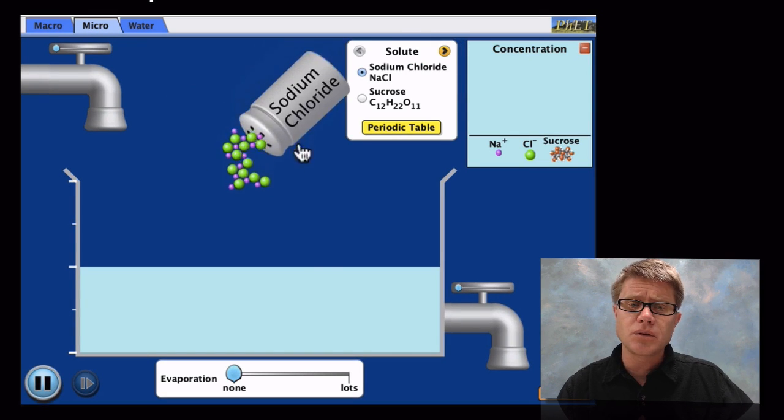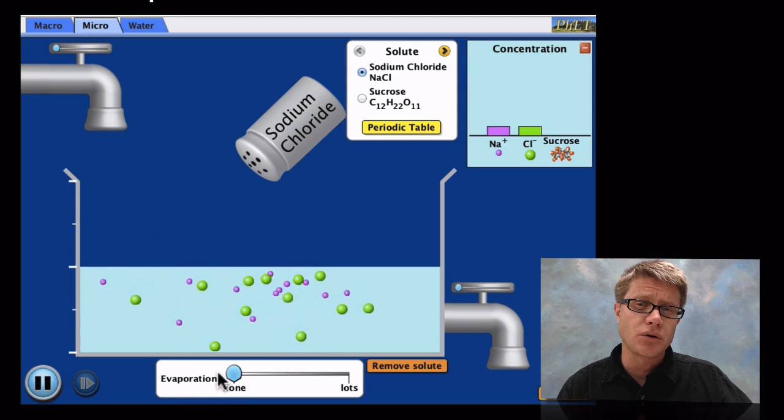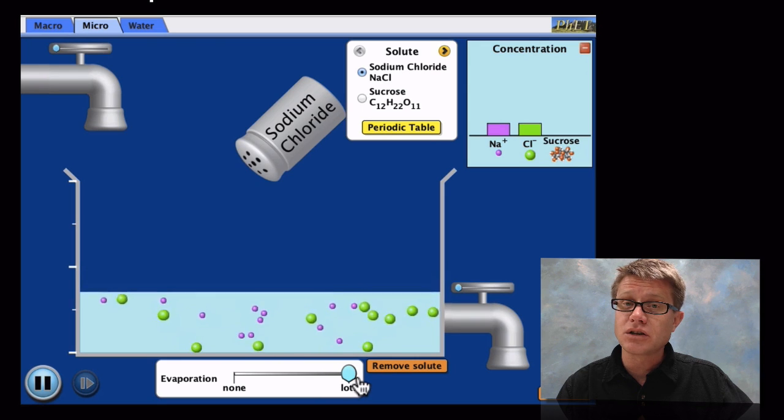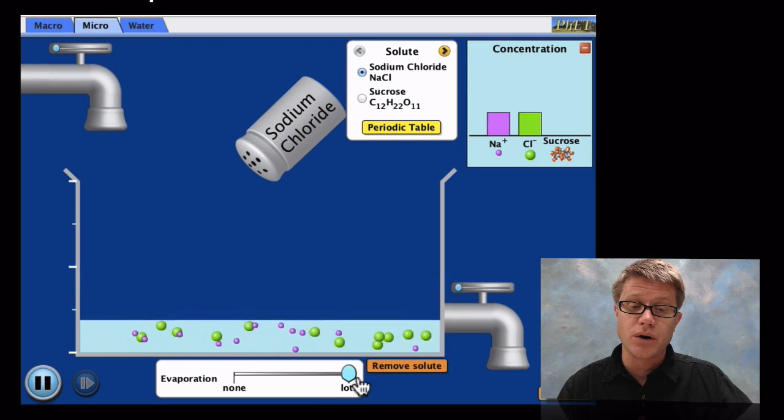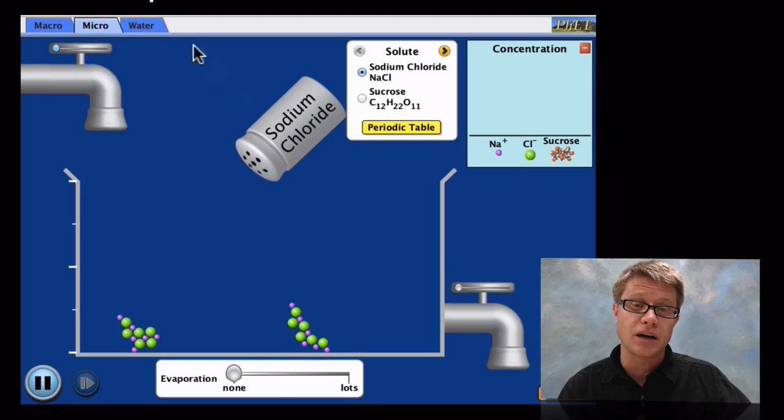Let's look at the microscopic level. So sodium chloride, remember, is an ionic compound. And so as we add that to salt, it's going to separate into its both sodium and chloride ions. And so they're each going to dissolve in the water. As we remove the water again, what happens? The concentration increases. And then bang, we're back to this ionic compound again.